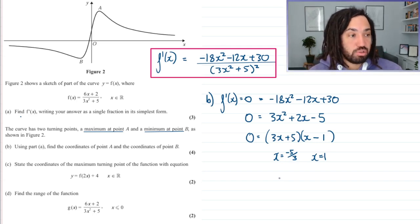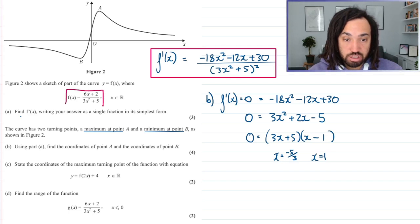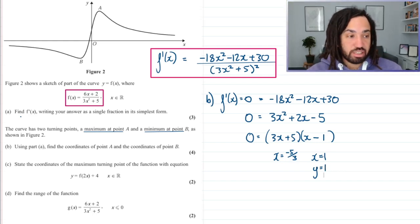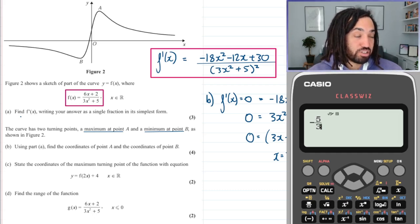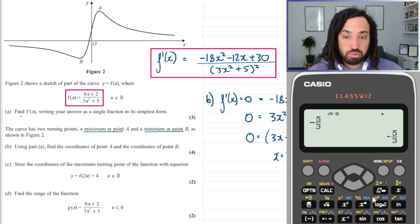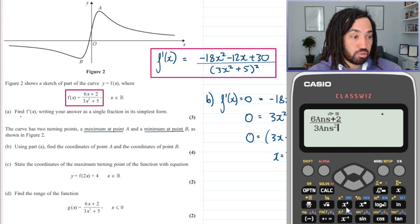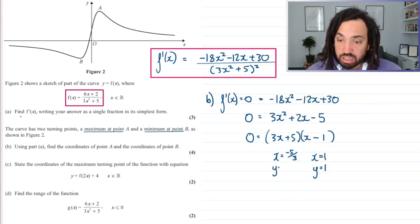Now we need to work out the corresponding y-coordinates, so we need to sub in to the original function. Let's sub in one first because that's nice and easy. It will give us six plus two, so eight, eight over three plus five is eight, so it's eight over eight, so y is equal to one. Let me get the calculator out to do the other one. Nice little trick that might save you a few seconds in an exam: when you sub in and you're subbing into something which occurs a couple of times in the function, just press what you're subbing in equals and then just use the answer button. So I do six times answer plus two over three answer squared plus five. So it's minus three over five, so y is equal to minus three over five.